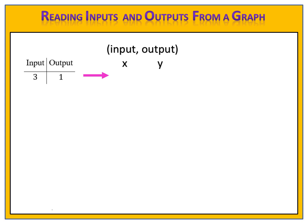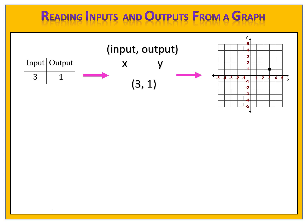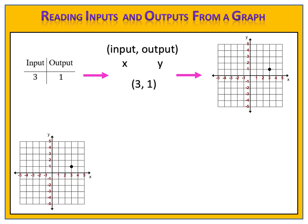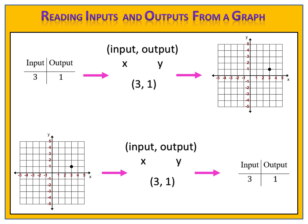So the input 3 and the output 1 could be written as the ordered pair (3,1), and in turn we could take that input and output, shown as the ordered pair, and plot that point on the graph. Because we can do that, the same is true for the opposite. We could begin with a graph that shows the point, write that point as an ordered pair, realizing that gives us the input and the output, and put that input and output in the input and output table.